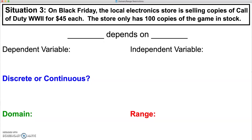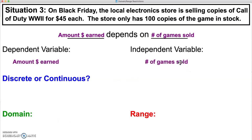Situation number three: on Black Friday, the local electronics store is selling copies of Call of Duty World War II for $45 each. The store only has 100 copies of the game in stock. The amount of money earned for the store depends on the number of games sold. From that, we determine our dependent variable and our independent variable. You can't sell half a game — you can only sell integer values of games — so this is going to be a discrete situation as well.